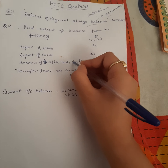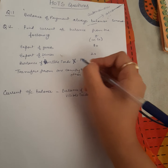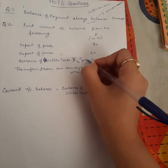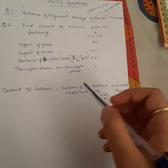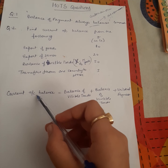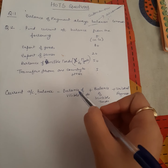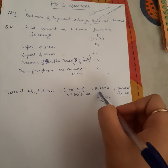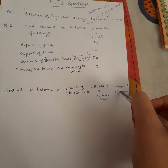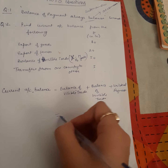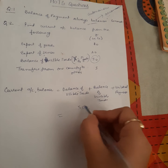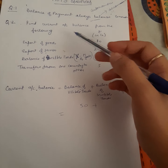Current account balance is calculated as: balance of visible trade plus balance of invisible trade plus unilateral payments. Balance of visible trade is given as 50. Now we need to add balance of invisible trade.